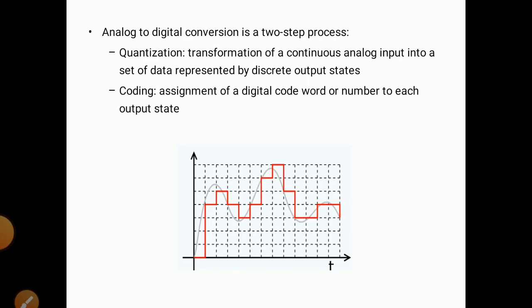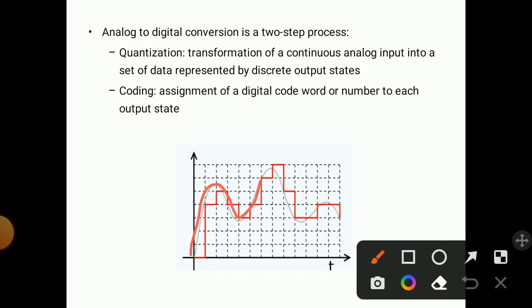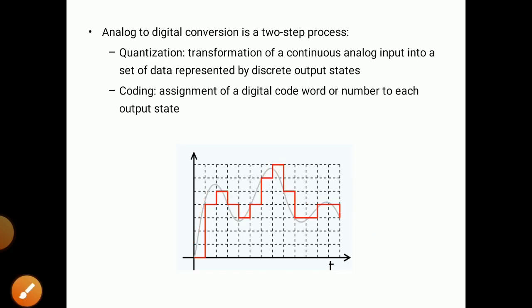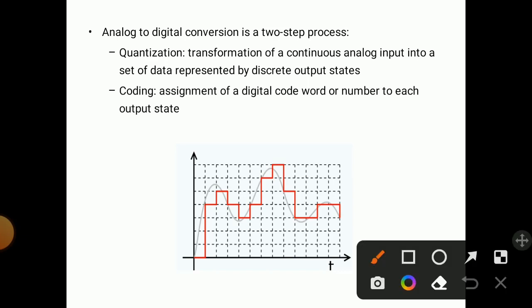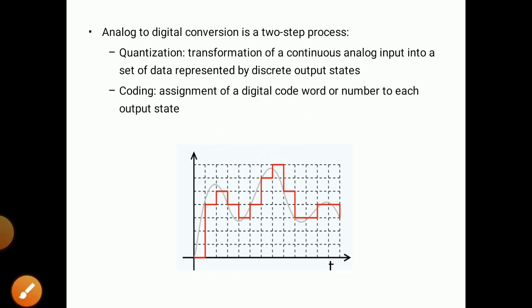Analog to digital conversion is a two-step process: quantization and coding. Quantization is the transformation of a continuous analog input into a set of data represented by discrete output states. In the diagram, a continuous analog input signal is shown, and this continuous input is divided into discrete output steps — shown as a square waveform, called discrete output states. Coding means the assignment of a digital code word to each output state — for each output state, some digital code is assigned.